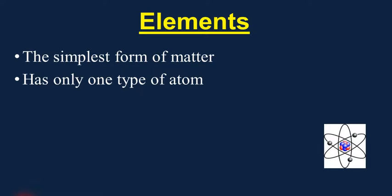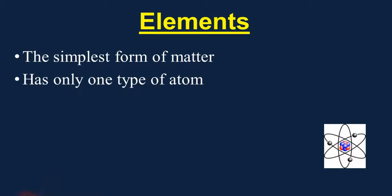Now, when we say atoms, this is just a graphical representation of what we're talking about — the idea of an atom having a nucleus in the middle with protons and neutrons, and then there are electrons buzzing around that nucleus. We'll talk more about what atoms are like in an upcoming lesson.